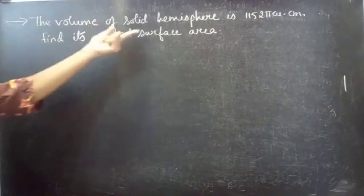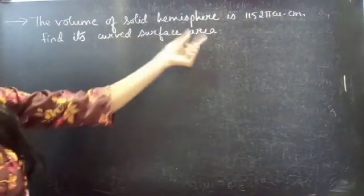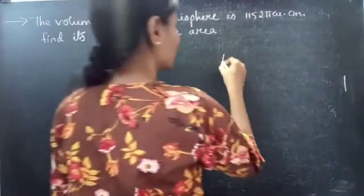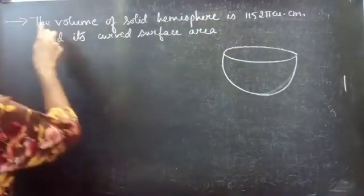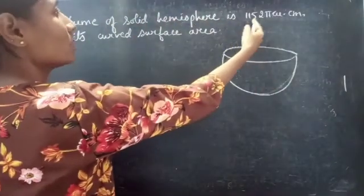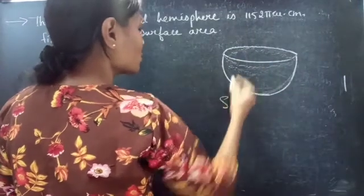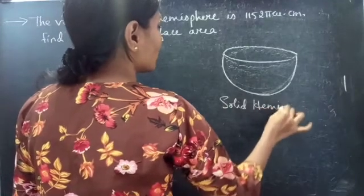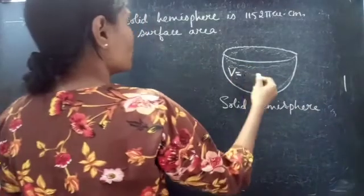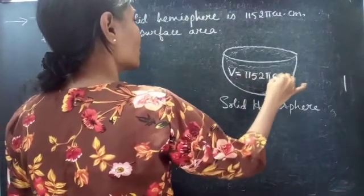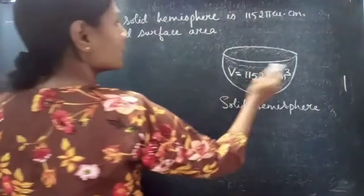Given problem: the volume of a solid hemisphere is 1152π cubic centimeter. We need to find its curved surface area. This is our solid hemisphere, and we are given its volume is 1152π centimeter cube. So we have to find its curved surface area.